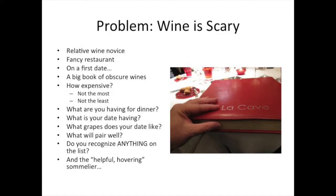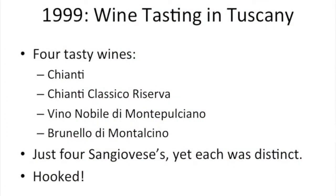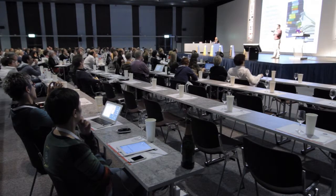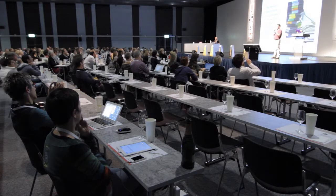Wine. Who can remember when terror was having a huge wine list dumped on a table in front of you? As a guy, utterly, completely scary — didn't know about wine, on a date. My first really positive experience with wine was bicycling through Tuscany — a very simple wine tasting one night: Chianti, Chianti Classico Reserva, a Vino Nobile, and a Brunello. I didn't know anything about wine, but all I remembered was that four things that should be the same were completely distinct. I was hooked.